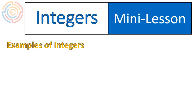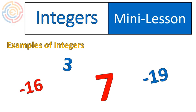First of all, I want to give some examples of integers. Integers are positive and negative numbers, so you might have the number 7, the number negative 16, negative 19, 3, 11. When we're talking about integers, we're talking about positive and negative numbers.